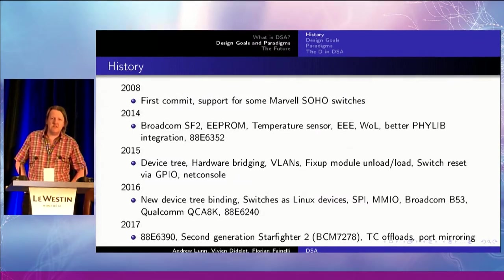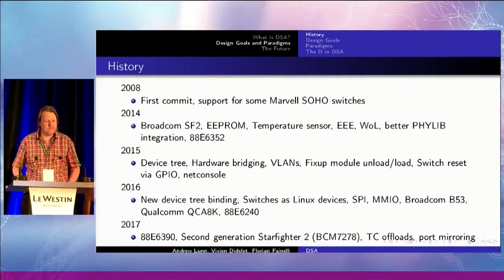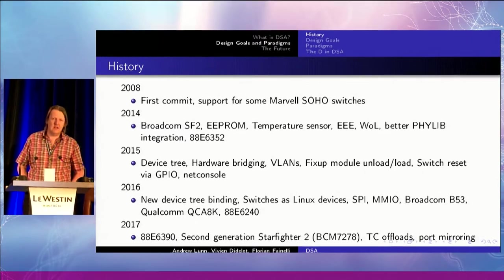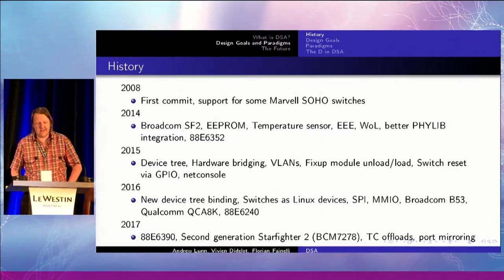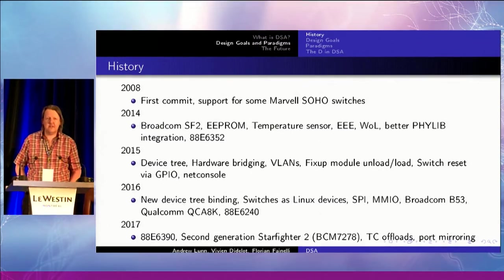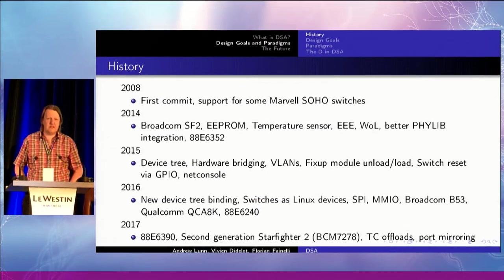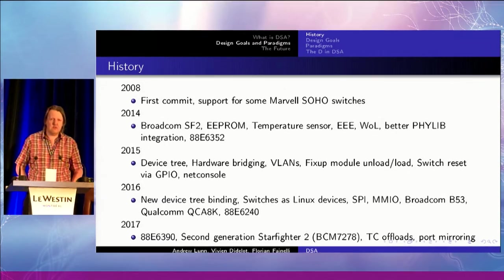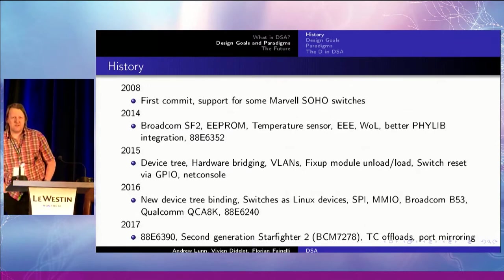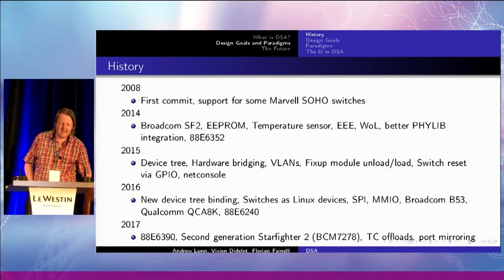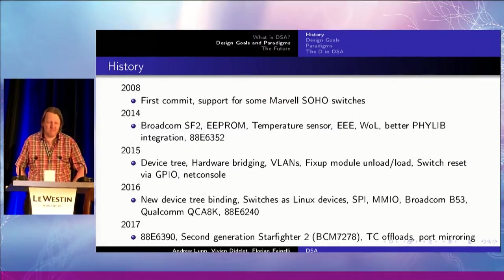A bit of history: 2008, got added. Then it slept for a long time. 2014, the Broadcom Starfighter 2 came, and we started adding things that go around the switch — things like the EEPROM used to configure the switch, temperature sensors, energy-efficient Ethernet, wake-on-LAN. The PHYs we like to control in the Linux way, so we used PHY-LIB. Another Marvell chip came along. We're in the embedded space — ARM, PowerPC — that means device tree normally, so we had to add a device tree binding. Then we actually got around to using the switch as a switch — hardware bridging, VLANs — then we fixed all the kernel splats when we unloaded and loaded the modules.